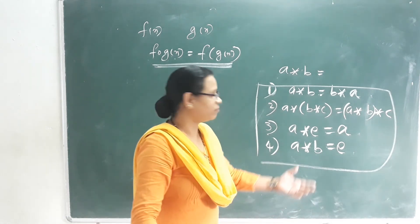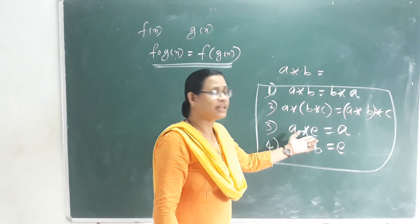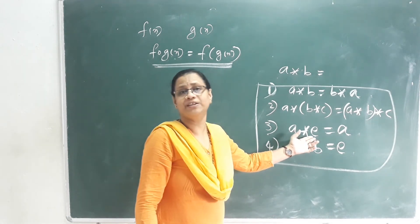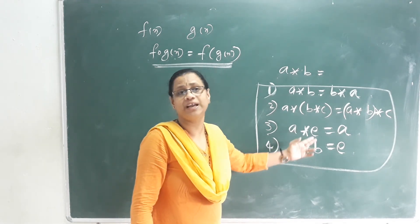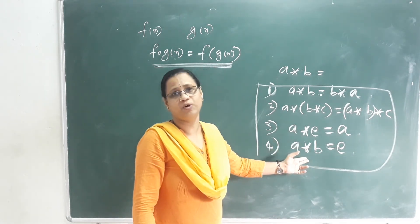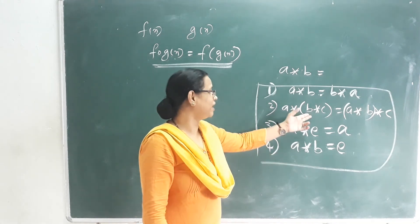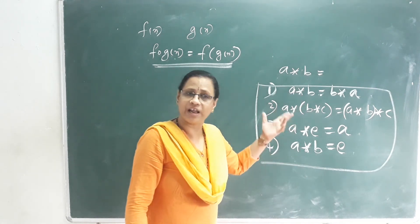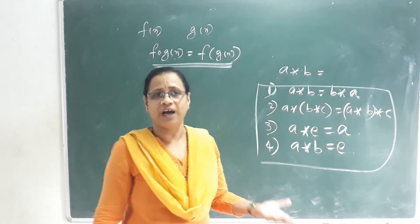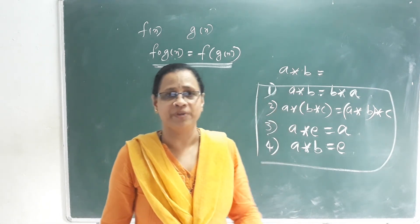Additionally, if a★b equals a★c, then b equals c — this is the cancellation property in binary operations.